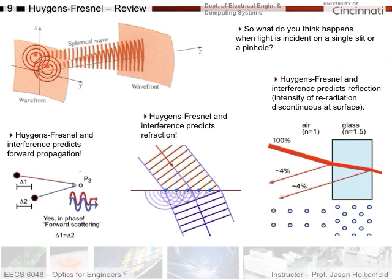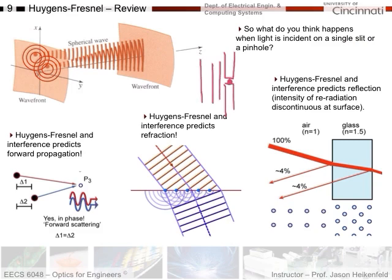Let's do a quick review. The Huygens-Fresnel principle predicts forward propagation based on interference principles. Looking at re-radiators at an interface, it also predicts refraction and Snell's law. And we've now explained how Huygens-Fresnel interference predicts reflection from a glass-air surface and at a metal surface. So let me ask: now that we understand this principle, what do you think happens when light is incident on a single slit or a pinhole?